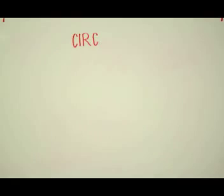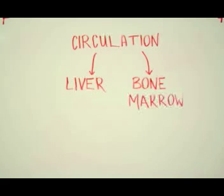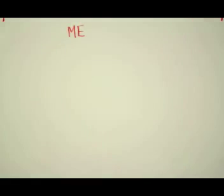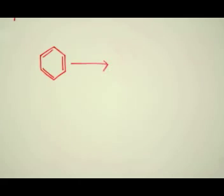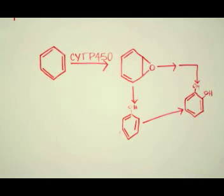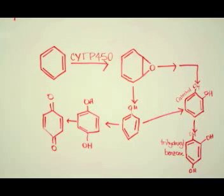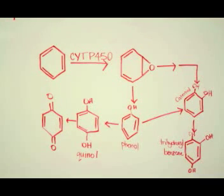Benzene is distributed throughout the body by systemic circulation, crossing membrane barriers through simple diffusion and targeting the liver and bone marrow. Metabolism occurs in both the liver and bone marrow, where benzene is oxidized by cytochrome P450 to produce multiple metabolites, including catechol trihydroxylbenzene, phenol, quinol, and P-benzoquinol.